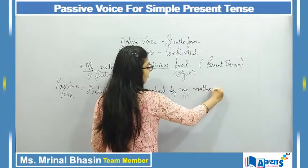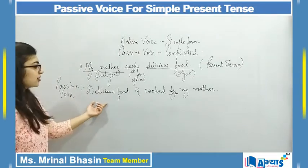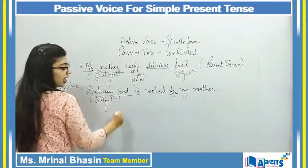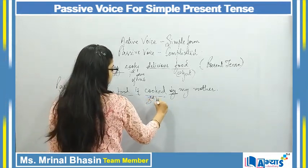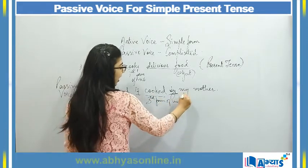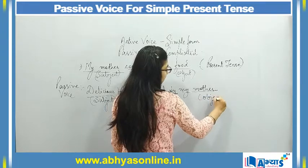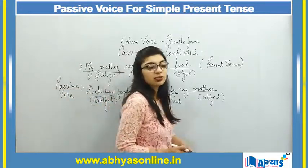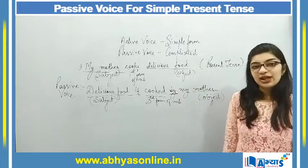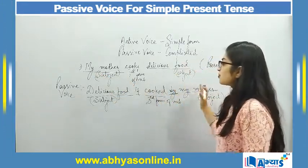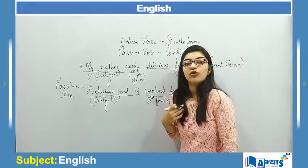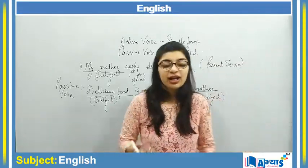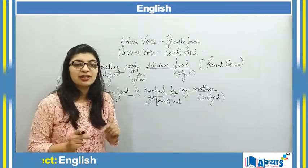I have told you that 'by' is used in passive form to indicate the doer. 'Delicious food' becomes the subject, 'is' is the helping verb we chose, 'cooked' is the third form of the verb, and 'by my mother' becomes the object. This is how we convert active voice to passive voice without changing the meaning. 'My mother cooks delicious food' and 'Delicious food is cooked by my mother' both have the same meaning.